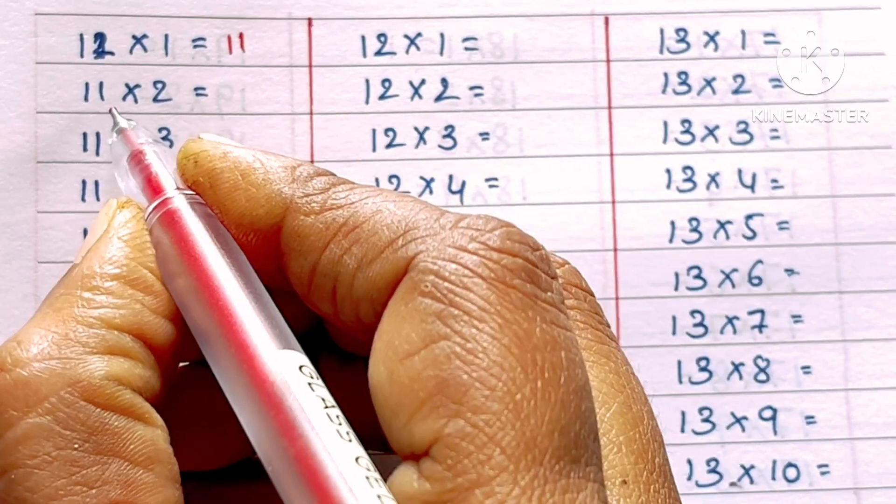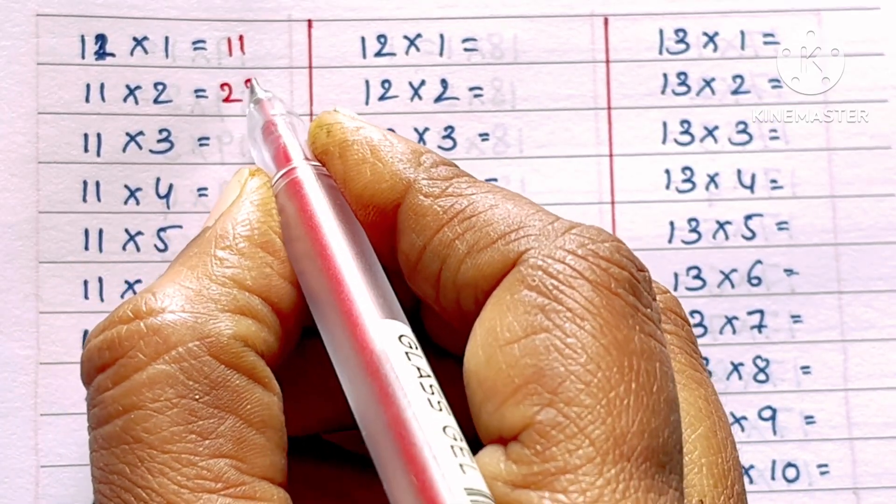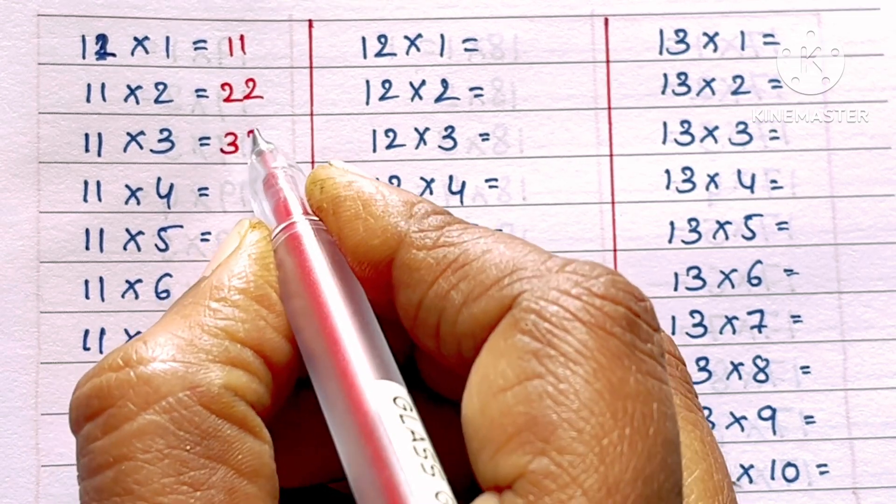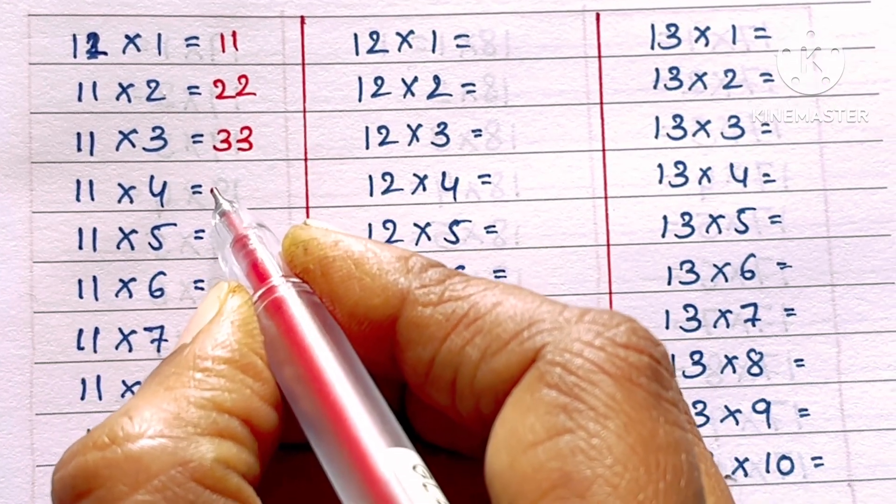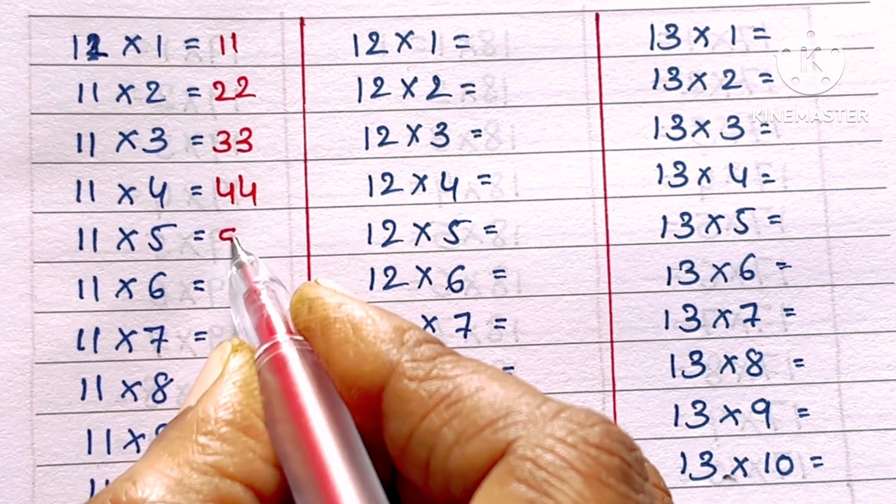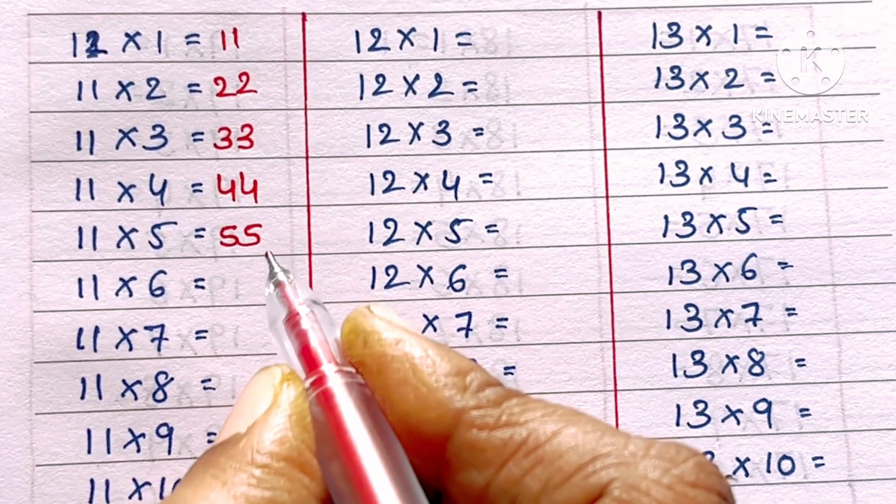11 ones are 11, 11 twos are 22, 11 threes are 33, 11 fours are 44, 11 fives are 55.